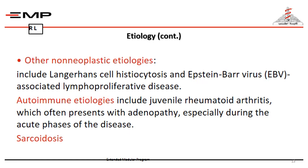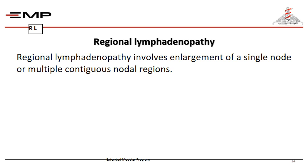Other non-neoplastic etiologies include histiocytosis and Epstein-Barr-associated lymphoproliferative diseases. Among the autoimmune etiologies, juvenile rheumatoid arthritis often presents with adenopathy, especially in the acute phases. Sarcoidosis is also a common presenting feature with lymphadenopathy, which may be either localized or generalized depending upon the stage of the disease.